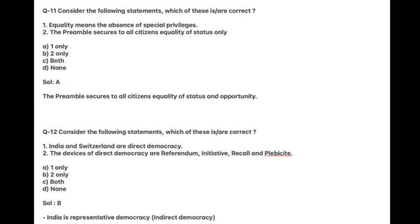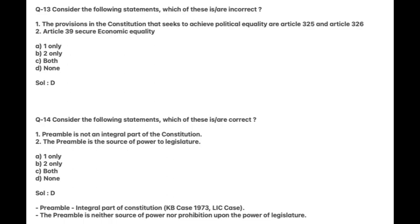Consider the following statements. Which of these are incorrect? One: The provisions in the constitution that seek to achieve political equality are Articles 325 and 326. Two: Article 39 secures economic equality. Answer is D — both statements are correct.